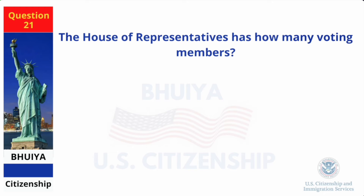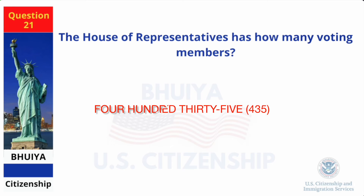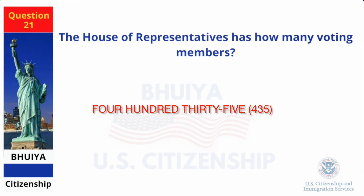The House of Representatives has how many voting members? Four hundred thirty-five.